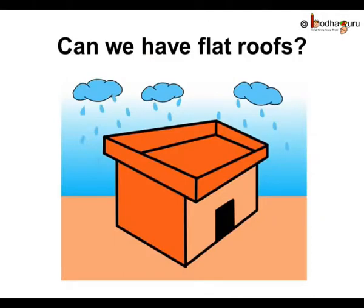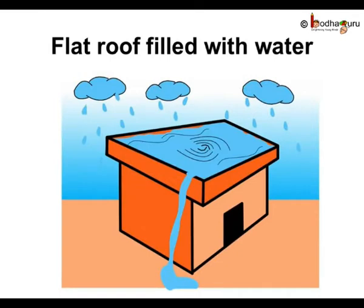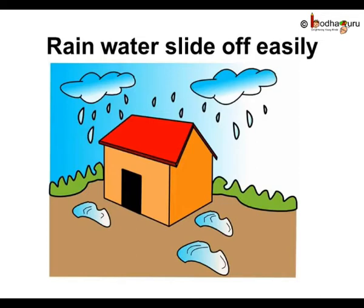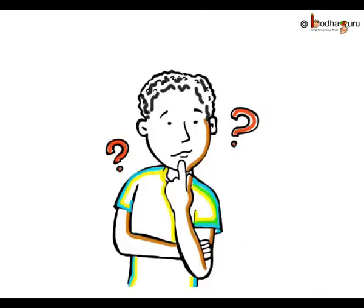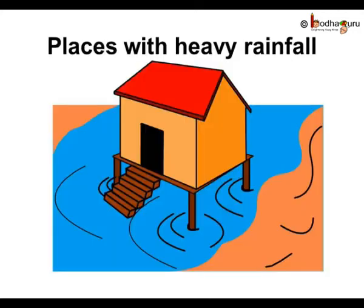What kind of houses should be there where it rains a lot? We cannot have flat roofs, as rainwater will collect and damage the house — so they should have sloping roofs. Also, if the house is on the ground, water will enter and fill all the rooms. So the solution is raising the house up. These houses are called houses on stilts. In areas where it rains a lot, houses are built on stilts and have sloping roofs.